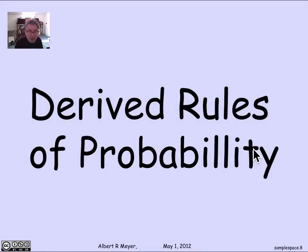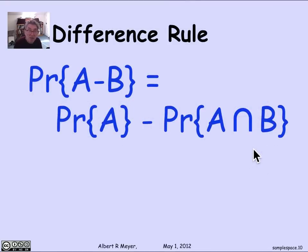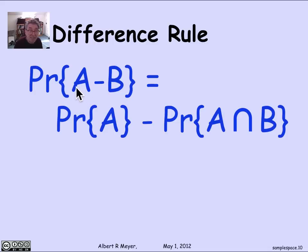Let's quickly note some rules that are corollaries of the countable sum rule. The first is the difference rule: the probability of A minus B equals the probability of A minus the probability of A intersection B. This looks just like the difference rule for cardinalities, and indeed the proof is the same: A equals (A intersection B) union (A minus B), and since those are disjoint sets you can add their probabilities, then transpose to get the difference rule.